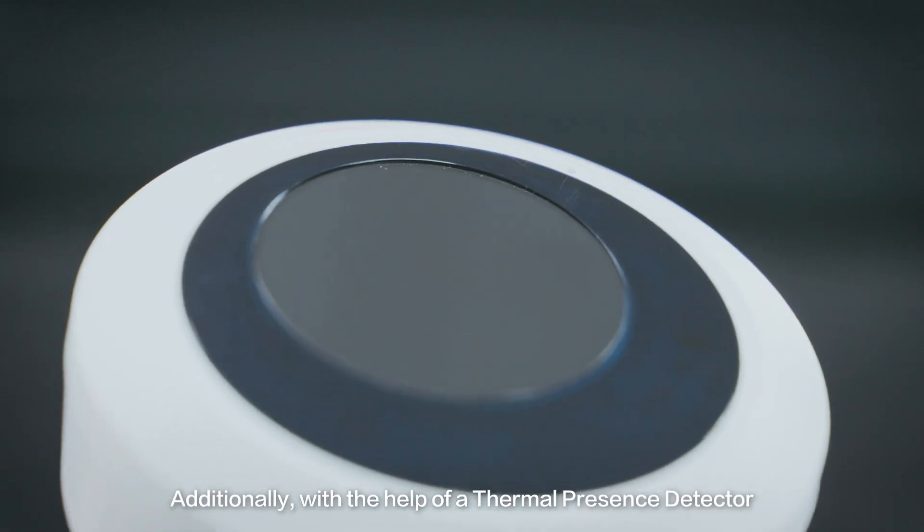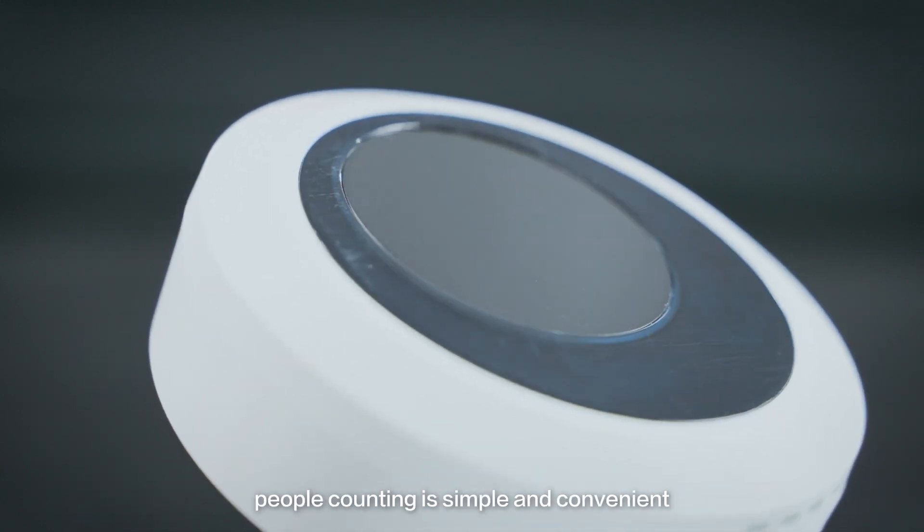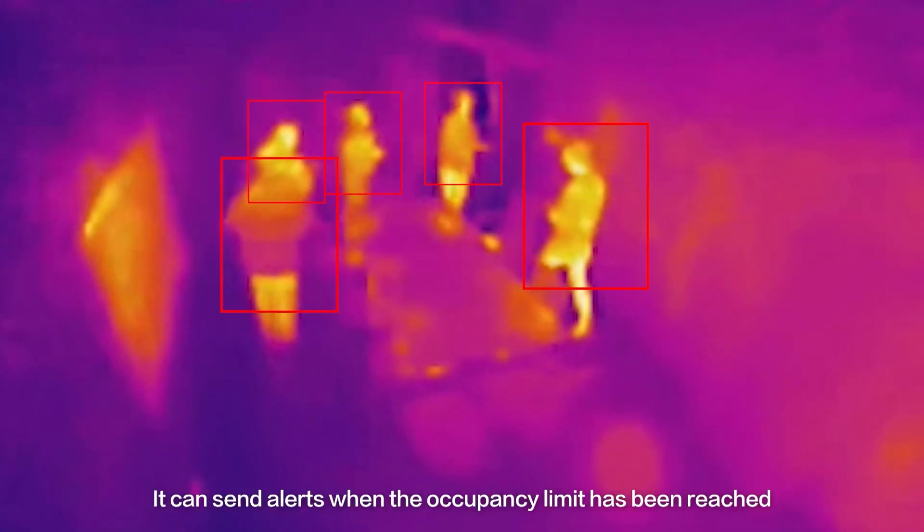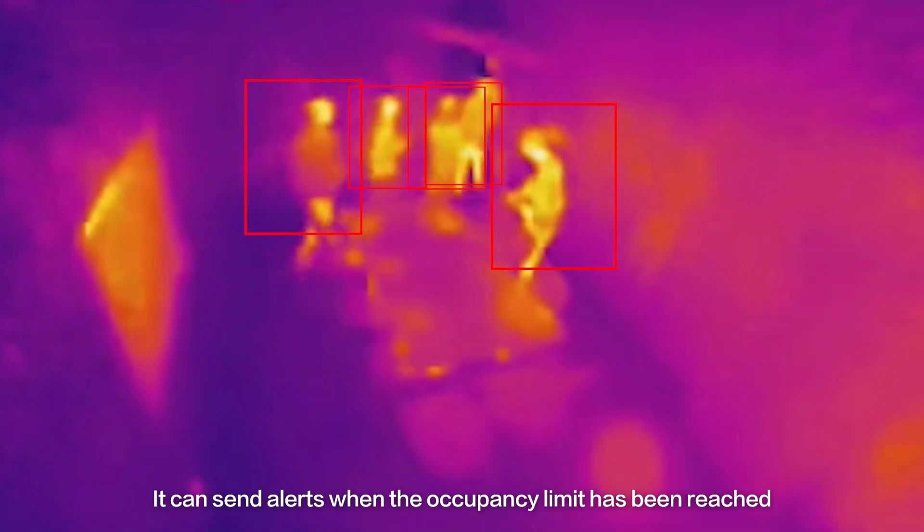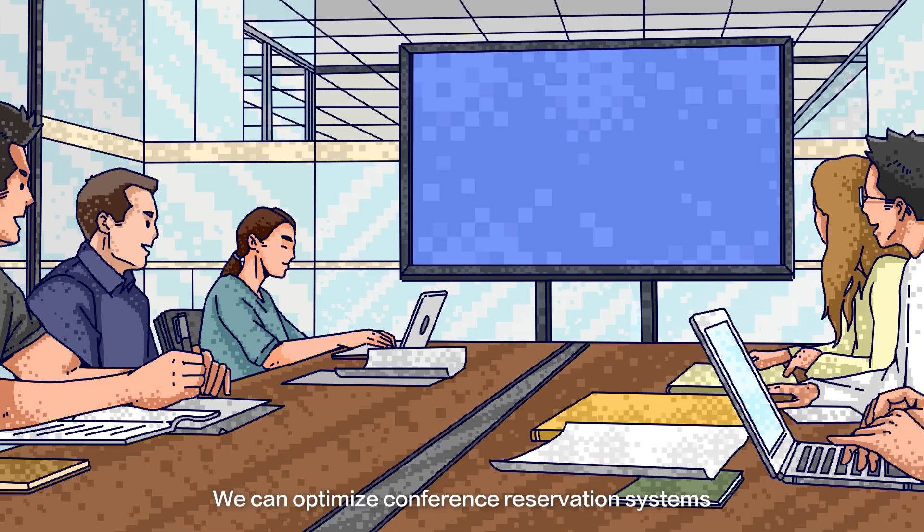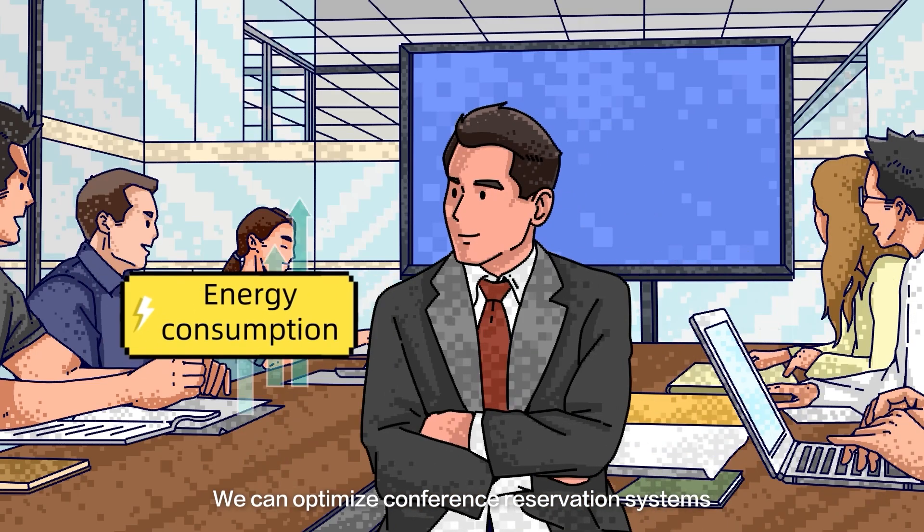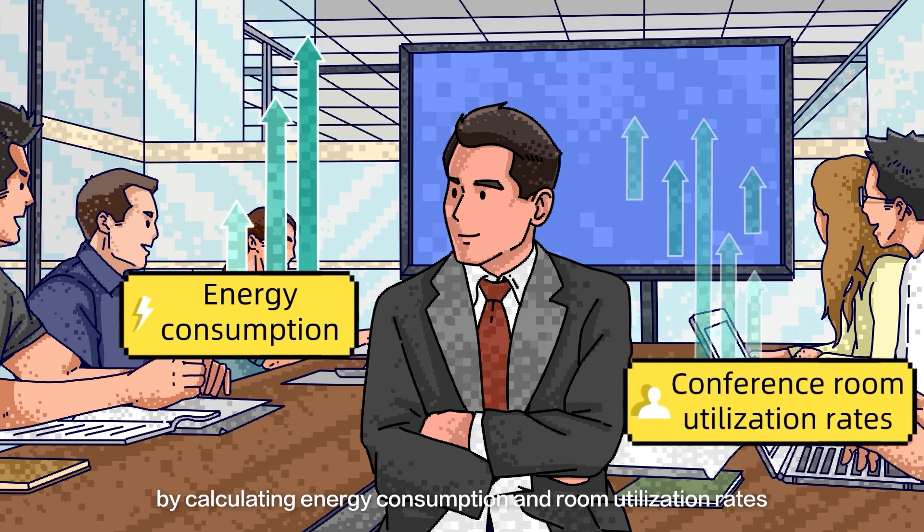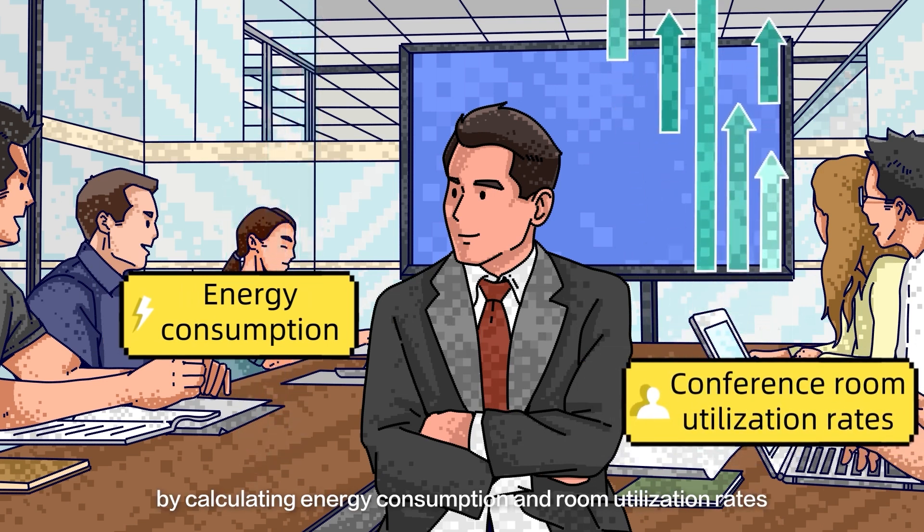Additionally, with the help of a thermal presence detector, people counting is simple and convenient. It can send alerts when the occupancy limit has been reached. We can optimize conference reservation systems by calculating energy consumption and room utilization rates.